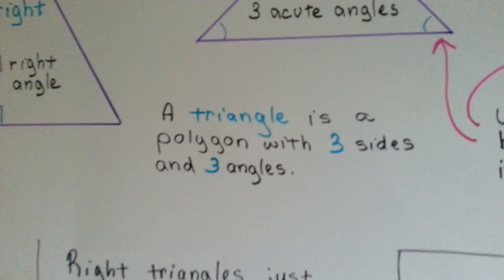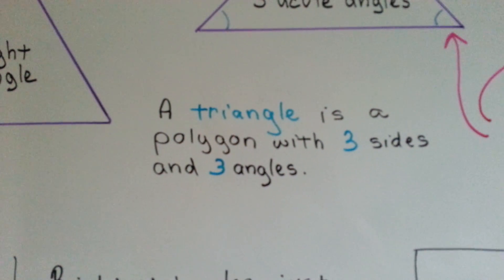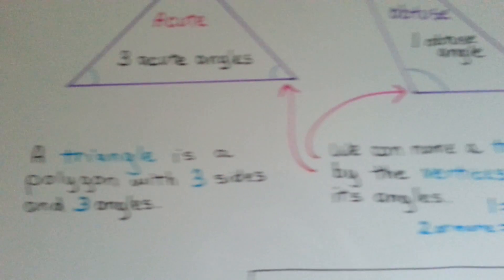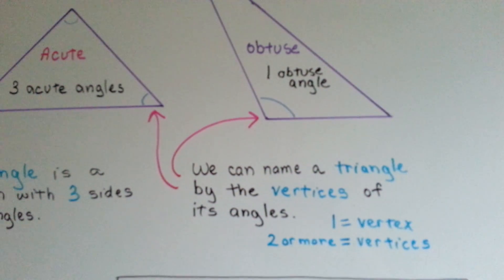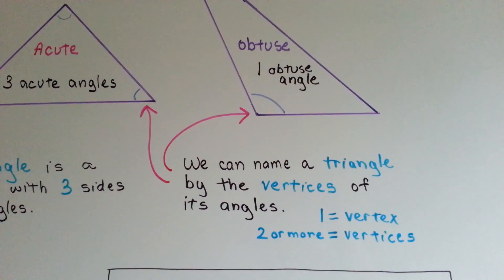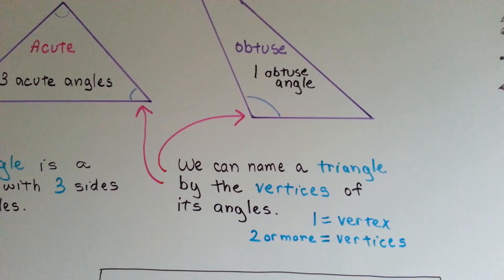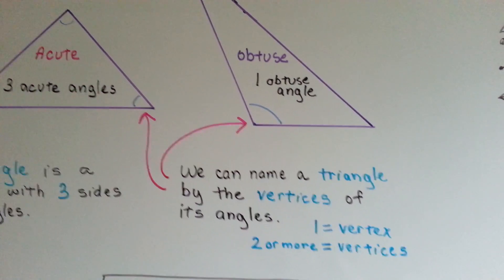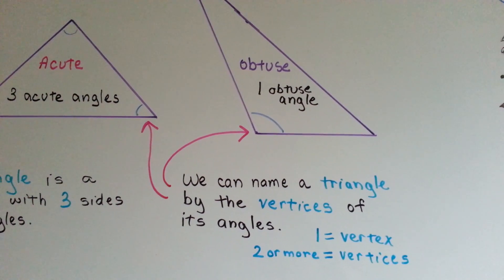A triangle is a polygon with three sides and three angles. We can name a triangle by the vertices of its angles. One vertex is one. Two or more, we call them vertices. It's the corners there.